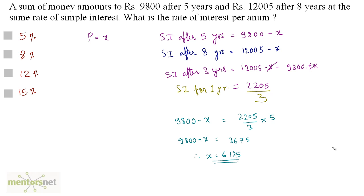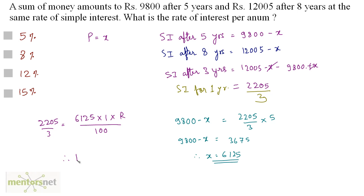We have the principal and we know the simple interest for 1 year. To find the rate, we use SI = PNR/100. Simple interest for 1 year is 2,205 by 3, the principal is 6,125, N is 1, and R is what we need. Solving gives the rate of interest as 12%. So the answer is option C.